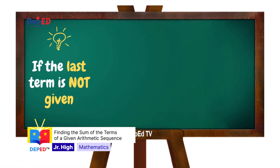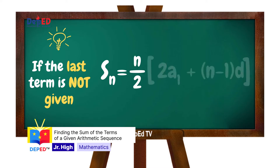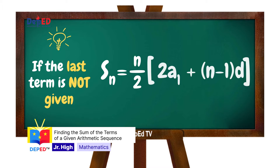On the other hand, if the last term is not given, we will use the formula S sub n is equal to n divided by 2 times the quantity (2 times a sub 1 plus (n minus 1) times d). Where S sub n is the sum of the first n terms, a sub 1 is the first term of the sequence, and d is the common difference.